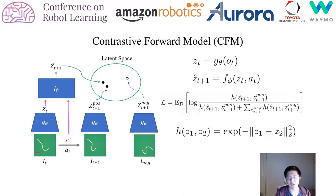There are two main components to our method. The first is the image encoder, G_θ, which takes in an image O_t and outputs a latent C_t. The second is the transition dynamics model F, which takes in the latent and action at the current time step and outputs its prediction for the latent at the next time step.